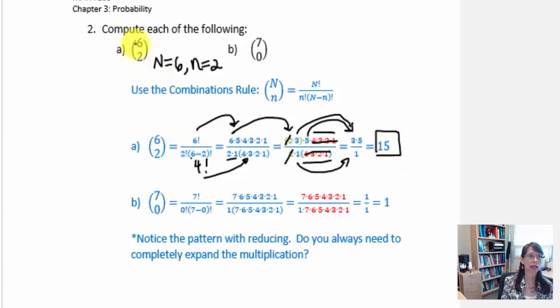So what this is really telling us is that if we have 6 total elements and we want to know how many combinations of 2 can be made, the answer is 15 different combinations.